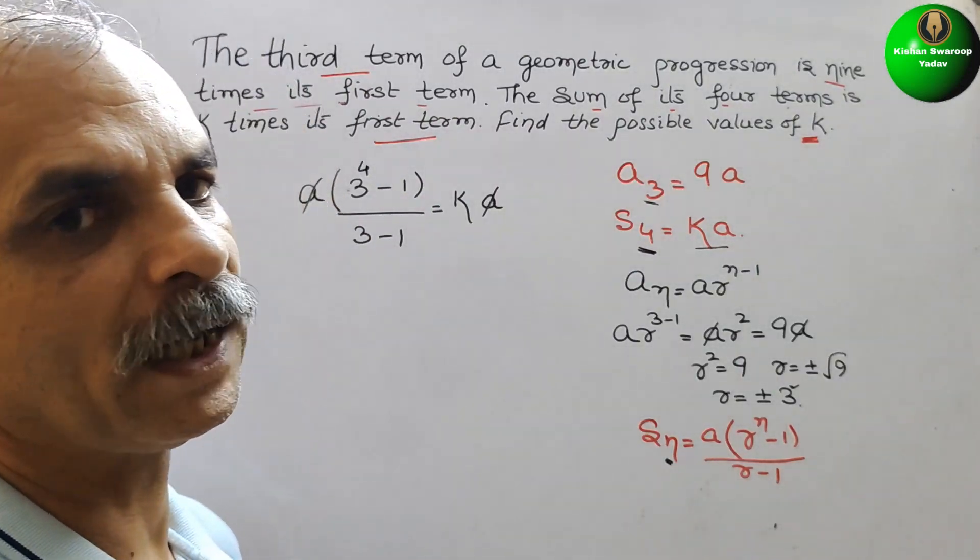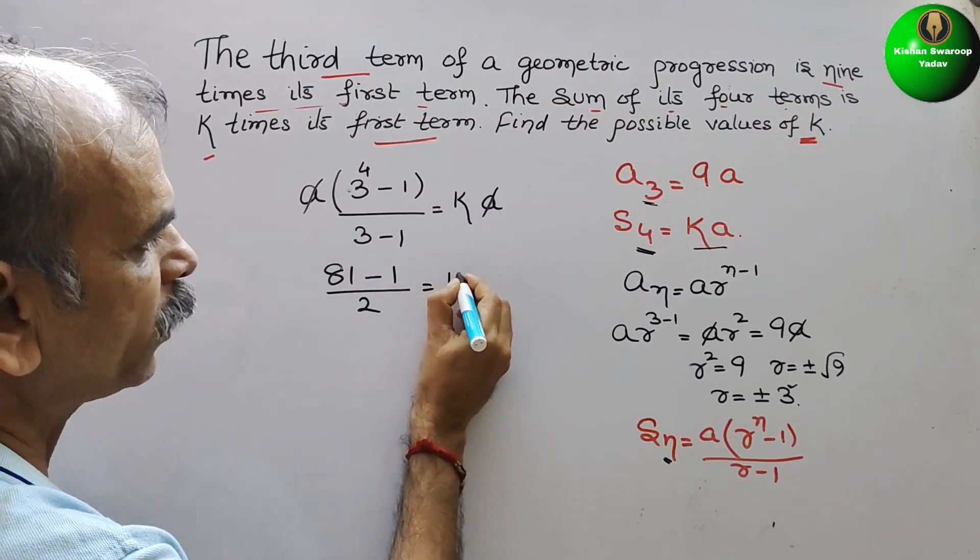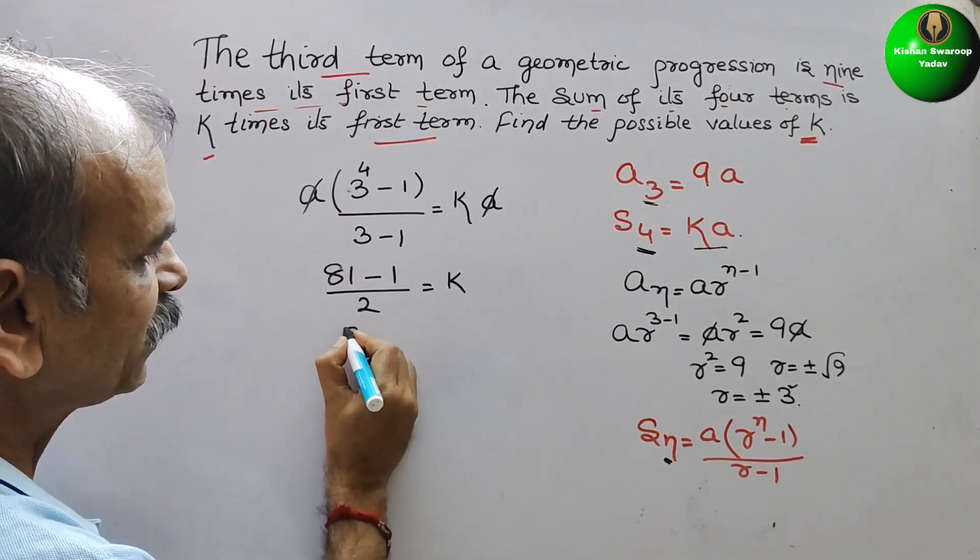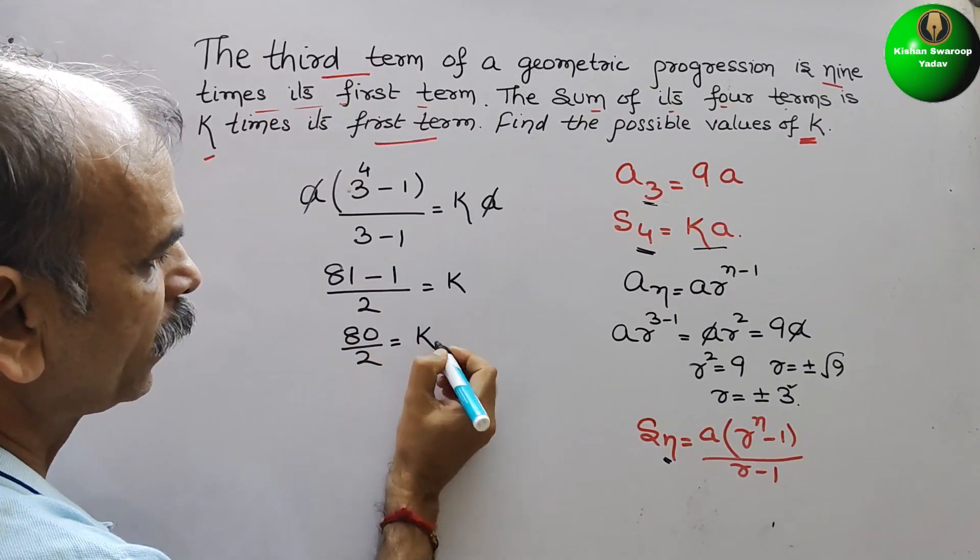a and a gone. So now we have to solve this. 3 to the power, 3 square is 9, 9 square is 81. So we can say 81 minus 1 by 3 minus 1 is 2, is equal to k. So now it is 80 by 2, that is equal to k. So if you reduce it, you will get k is equal to 40.